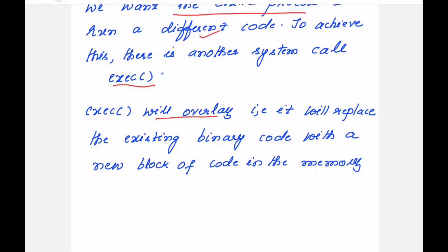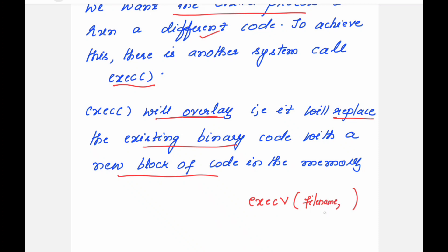EXEC will overlay — that means it will replace the existing code with a new block of code. I will show you with a demo program. We have a variant of EXEC called EXECV. This accepts two arguments: one should be the file name whose code should replace the current code, followed by the arguments. This is the format for EXECV.